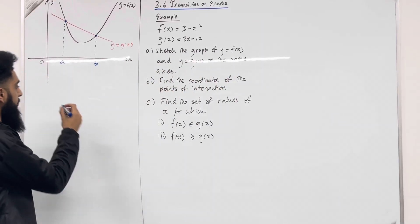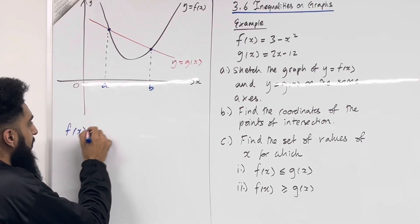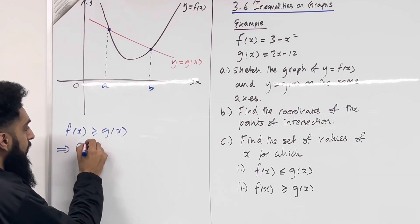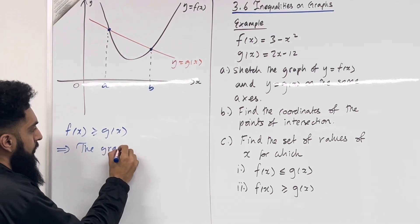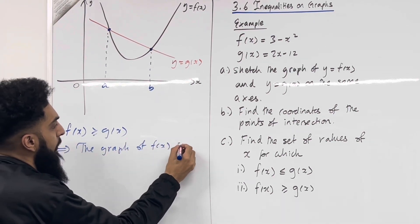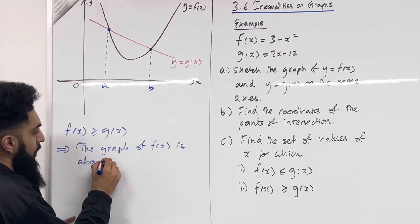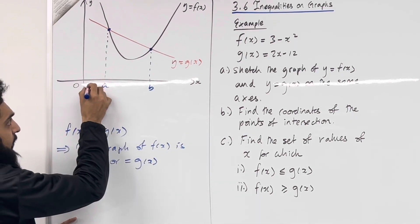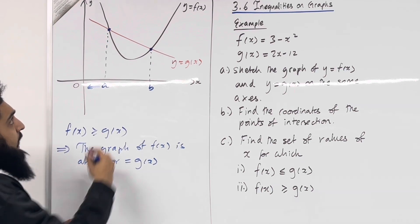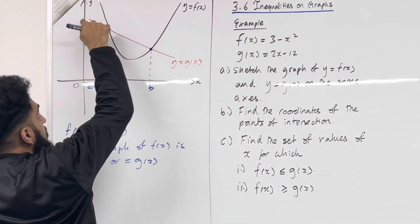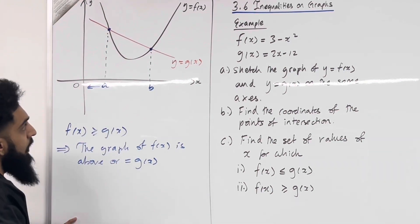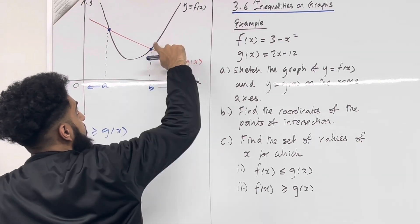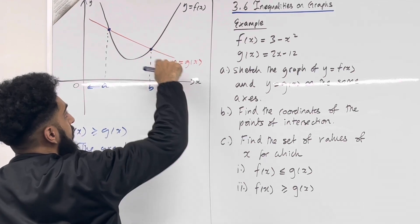Suppose I have the following statement: f(x) is greater than or equal to g(x). What does this imply? Well, this implies that the graph of f(x) is above or equal to the graph of g(x). So if I go back to the coordinate grid, I'll notice that for x less than or equal to a, the graph of f(x) is above or equal to the graph of g(x). Also, for x greater than or equal to b, the graph of f(x) is above or equal to the graph of g(x).